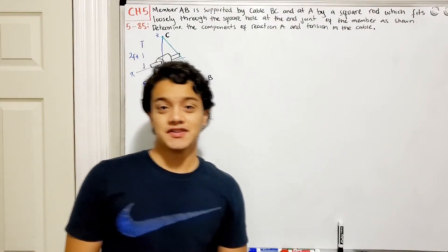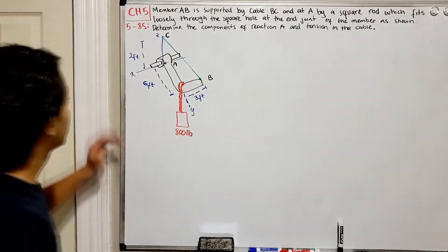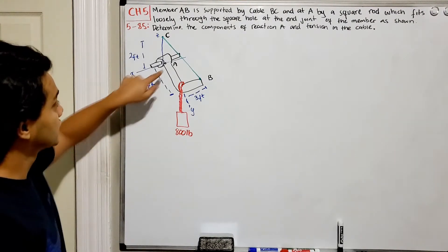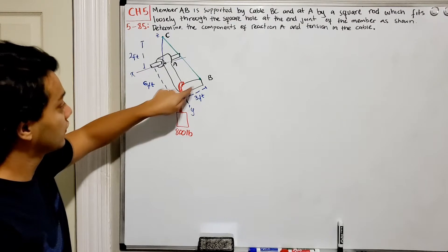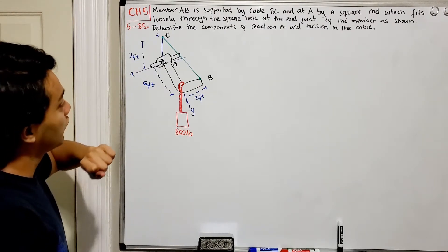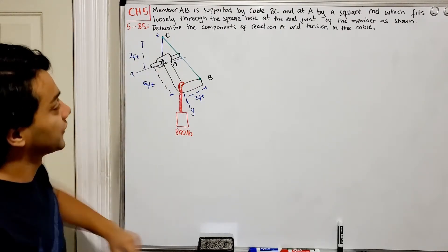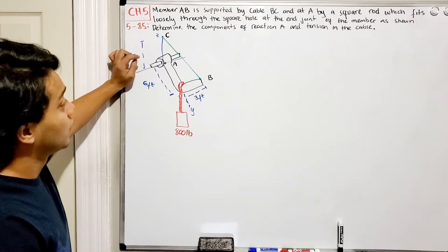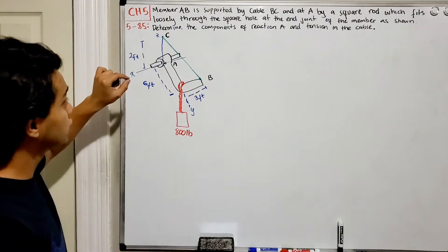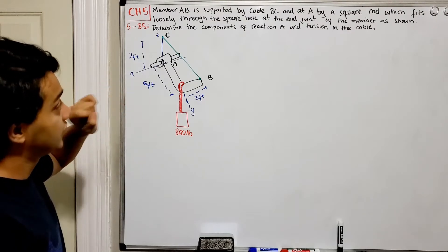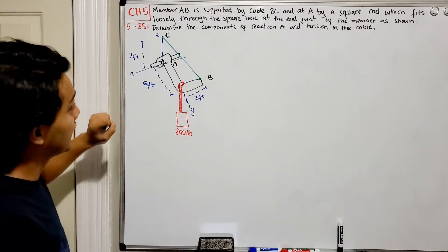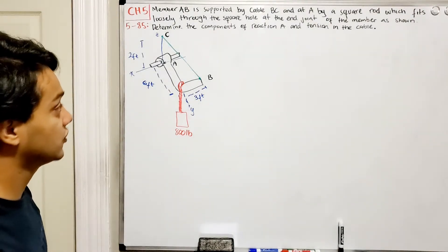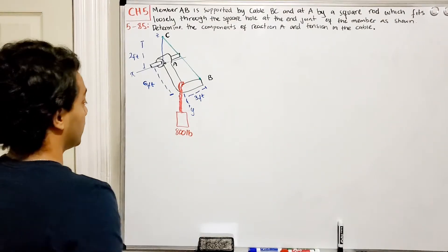Welcome back everyone to Learning by Teaching. We're in Statics and we're going to do problem 5.85. Member AB, the member that goes from A all the way to B, is supported by cable BC. At A we have a square rod which fits loosely through the square hole at the end joint of the member as shown. Determine the components of reaction at A and tension in the cable.